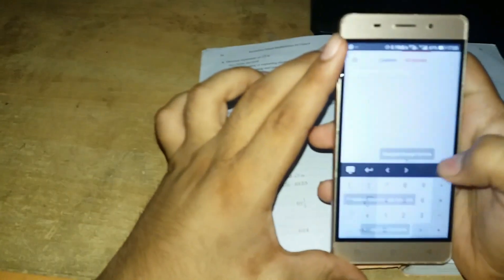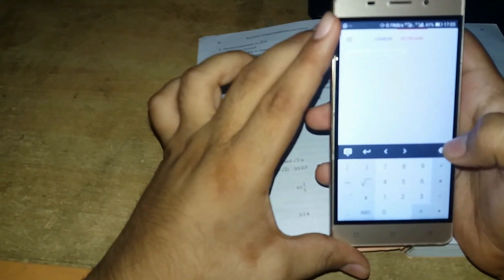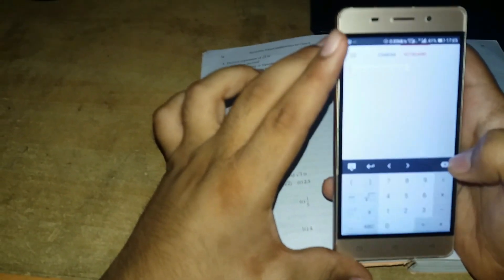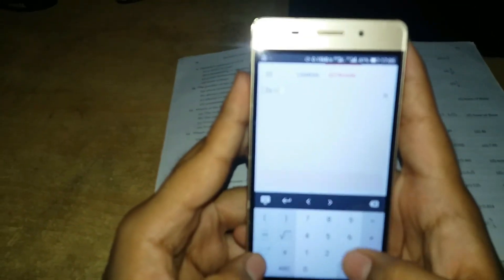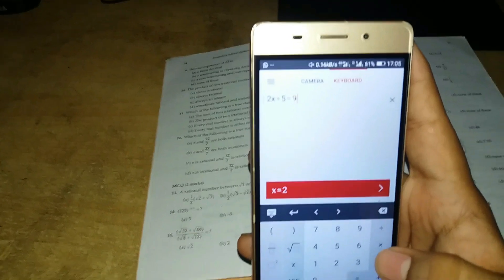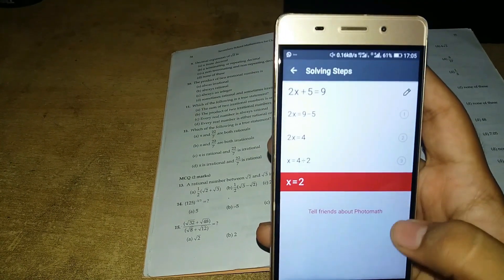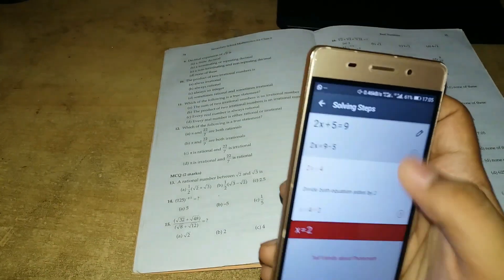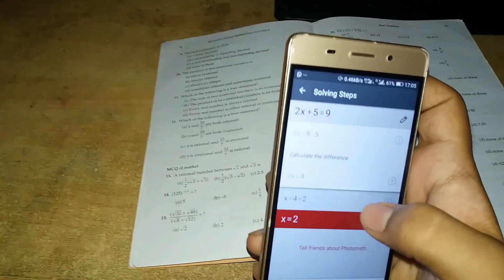Let's click on keyboard. If we have an equation like 2x plus 5 is equals to 9, we have to find the value of x. We can find like this 2x plus 5 is equals to 9. Here is x. The value of x is 2 and here also we get explanation for each step.